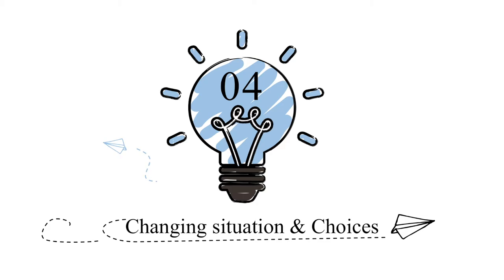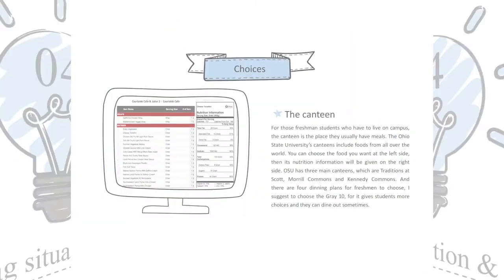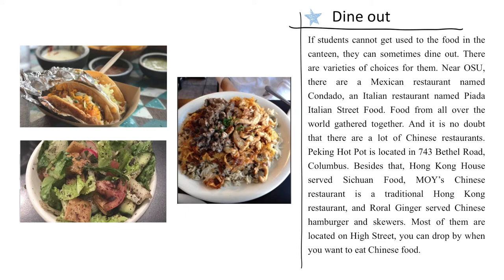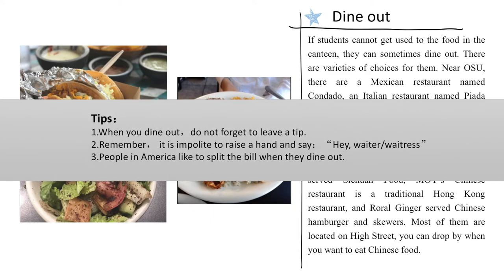The next part of the video will discuss the changing situation and our choices. The first choice is the canteen. For freshmen who have to live on campus, the canteen is the place they usually have meals. OSU has three main canteens and there are four dining plans for freshmen to choose from. I suggest choosing the Great Time plan, as it gives students more choices and they can dine out sometimes. The second choice is to dine out. There are varieties of choices near OSU — food from all over the world, and there are a lot of Chinese restaurants, most located on High Street.